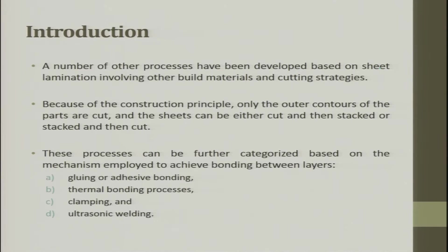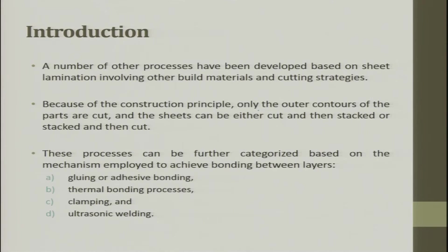A number of other processes have been developed based on sheet lamination involving other building materials and cutting strategies. There is no supporting structure used; the sheet placed as extra material is the support. The sheet is stacked layer by layer, and once the object is done you chisel out all the squares and take the product out. Only the outer contour of the parts is cut, and the sheet can either be cut-then-stacked or stacked-then-cut — both options are available.